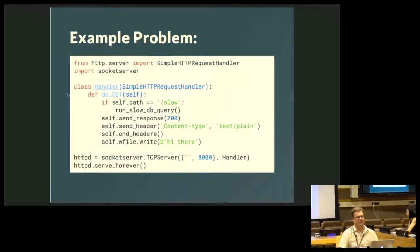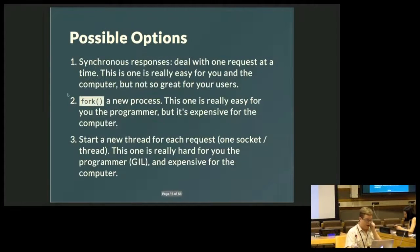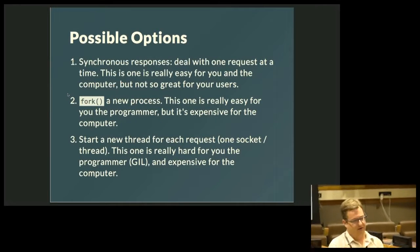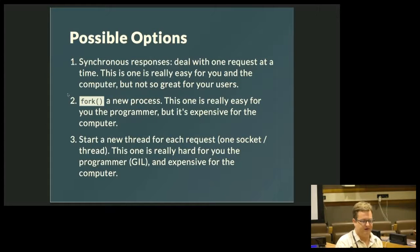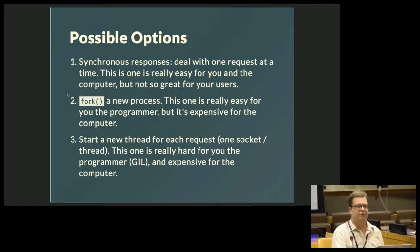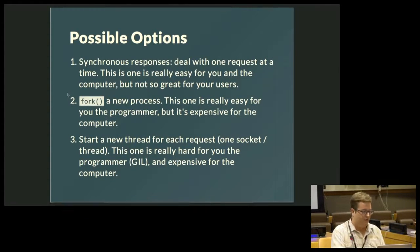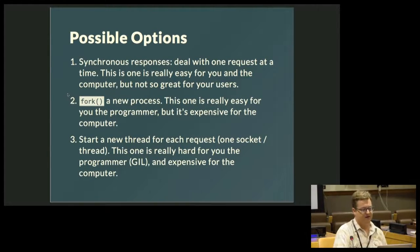So the problem here is that if we have a thing that might take a little bit of time and somebody else wants something very fast, we have to wait. We have to block until the slow thing finishes before we can handle the fast thing for everybody else. So what are our options? Well, there are really three. We could have synchronous responses where we deal with one request at a time — this is easy for you but not so great for your users. The person who just wants to see the home page will be waiting for somebody else who wants a slow page.